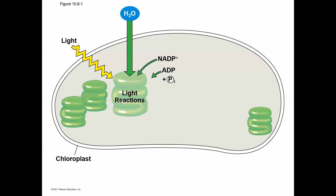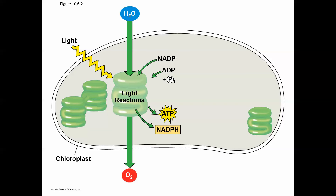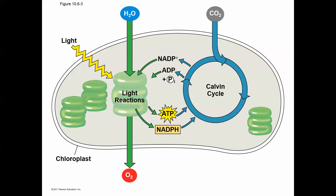Overall, the two major reactions are the light reactions and the Calvin cycle. The light reactions use light energy, water, and NADP+ to generate oxygen gas, NADPH — an electron shuttle similar to NADH in respiration — and ATP. ATP and NADPH then go to the Calvin cycle, where CO2 is brought in and sugars are produced. The light reactions take place in the thylakoid membrane, while the Calvin cycle takes place in the stroma.